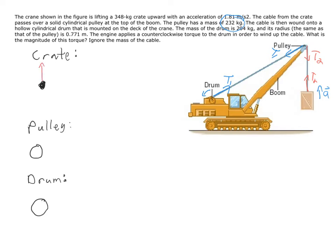If we look at the crate, it's going to have T2 pulling up, it's going to have its weight going down, and then it'll be accelerating upward. So if we do the sum of the forces for the crate in the y direction, we know they have to equal ma. So we get T2 minus mass of the crate times g equals mass of the crate times a.